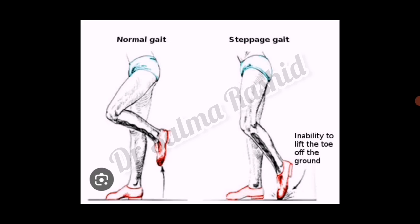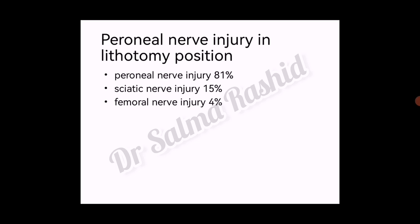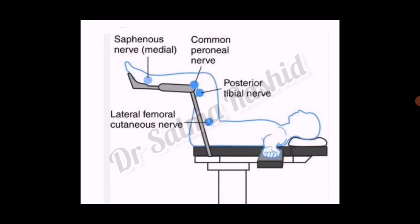As gynecologists, we use the lithotomy position for deliveries and gynecological procedures. The peroneal nerve injury rate in lithotomy position is 81 percent — very high. Sciatic nerve injury accounts for 15 percent and femoral nerve injury for 4 percent. The diagram shows the nerves injured: the lateral femoral cutaneous nerve at the hip joint, the common peroneal nerve and posterior tibial nerve at the knee, and the saphenous nerve at the ankle.